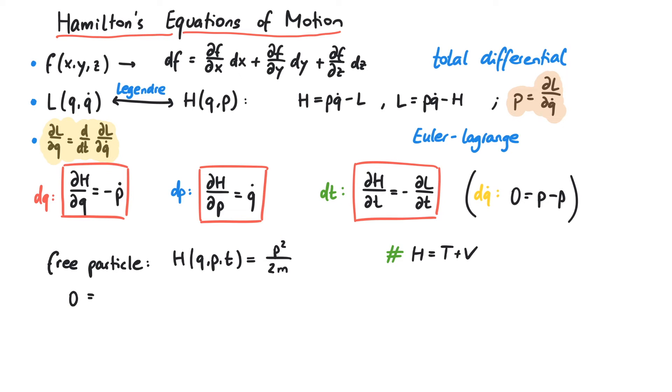First let's look at p-dot. Since the Hamiltonian does not depend on q, p-dot is zero. This means that the momentum of the particle is constant. For q-dot, we get p over m. Since the momentum is constant, the velocity, q-dot, is also constant. And this means that the particle described by this Hamiltonian moves with a constant velocity. And that's pretty much it for now.